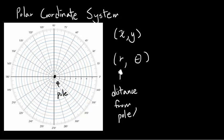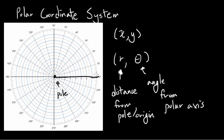And theta is the angle from polar axis. Polar axis. Polar axis is the positive X axis right here. That's polar axis.